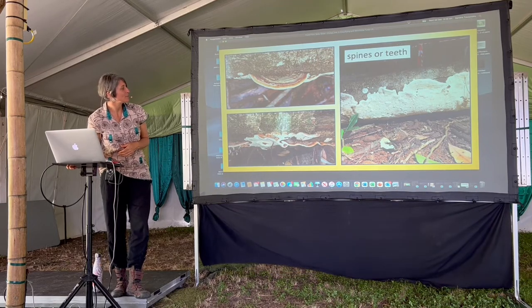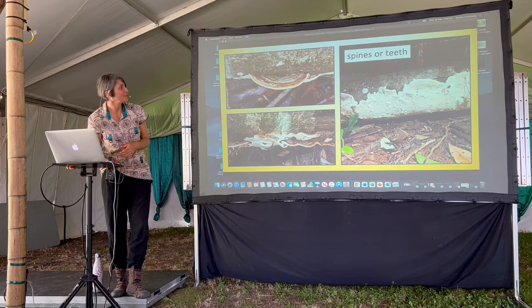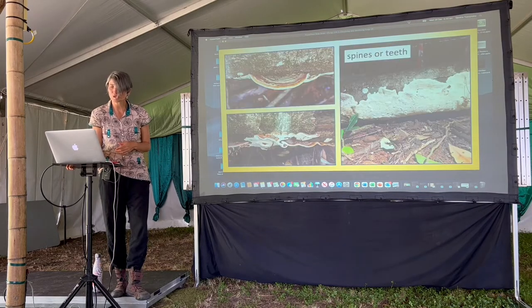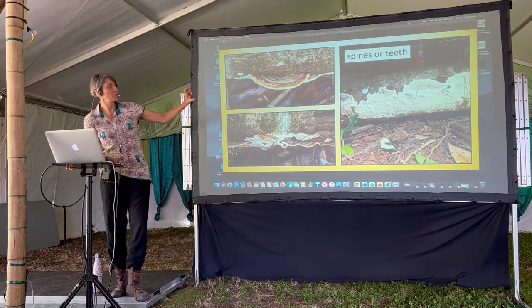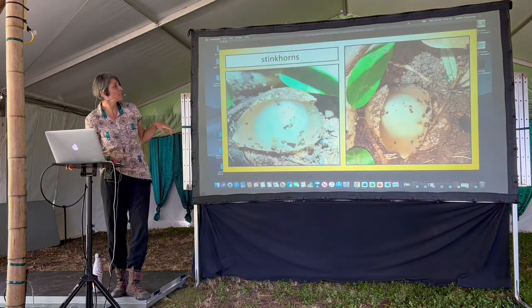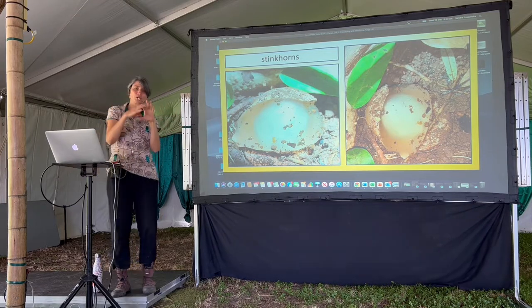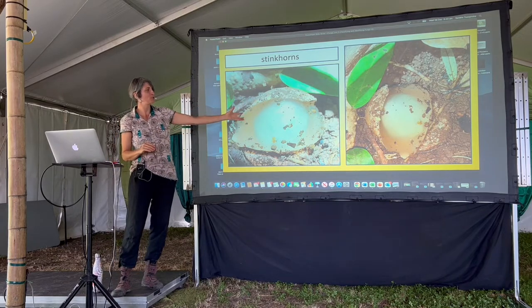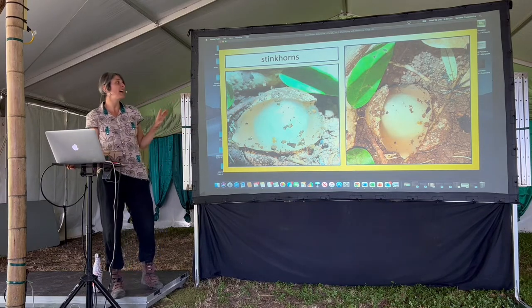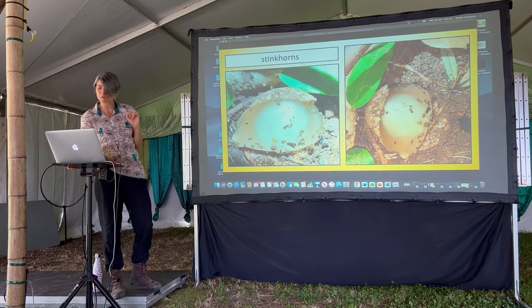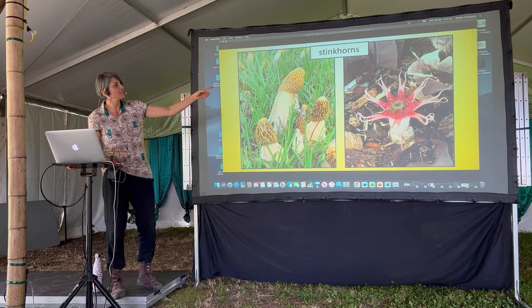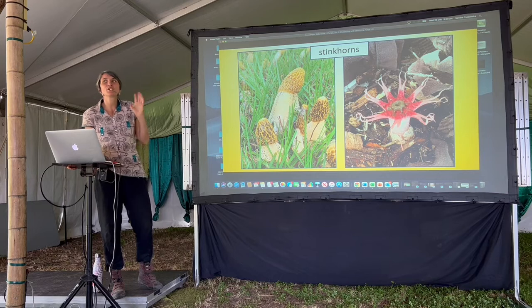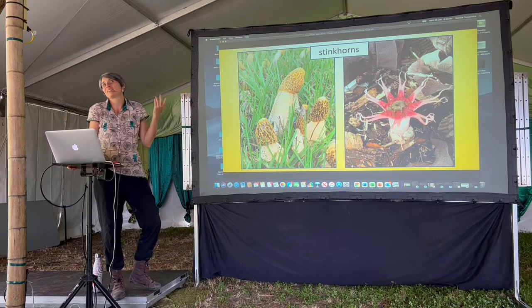Spines or teeth — fungi can literally have spines or teeth underneath. And stinkhorns — one looked like an eye of a crocodile or an alien sitting there, waiting to sprout. There's the Aseroë rubra, that 'alien butthole fungus' — don't quote that name, I just made it up, but it was fun.